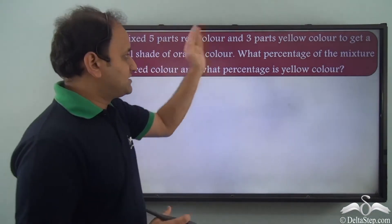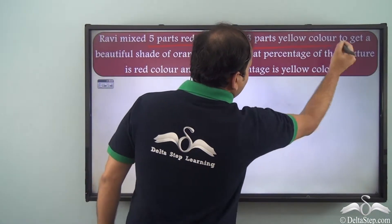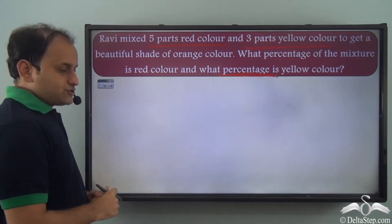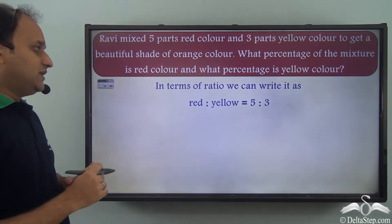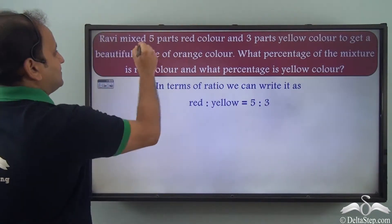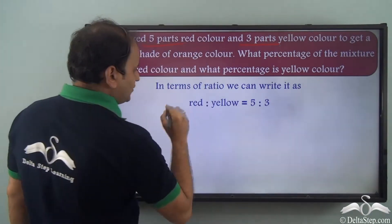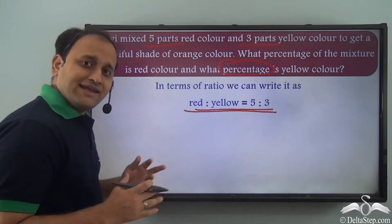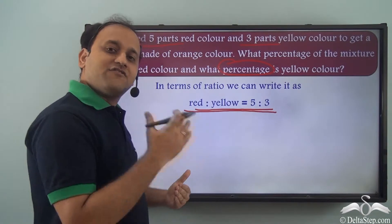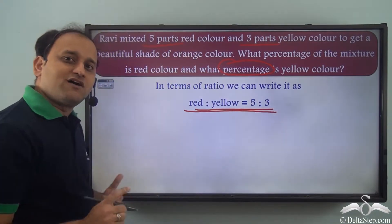In the mixture, 5 parts were red color and 3 parts were yellow color, and we need to calculate the percentage. First of all, in terms of ratio, we can write it as red is to yellow is equal to 5 is to 3. Now to convert ratio to percentage, we will first have to get the ratio in the form of a fraction. Simply writing it as 5 by 3 will not solve our problem.